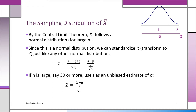If n is large — some say 30, some say 50 — you can use S as the unbiased estimate of sigma. That gives you a Z test: you take x-bar minus mu, divided by S over the square root of n. This will be used a lot in this course. This is a Z test for large samples.